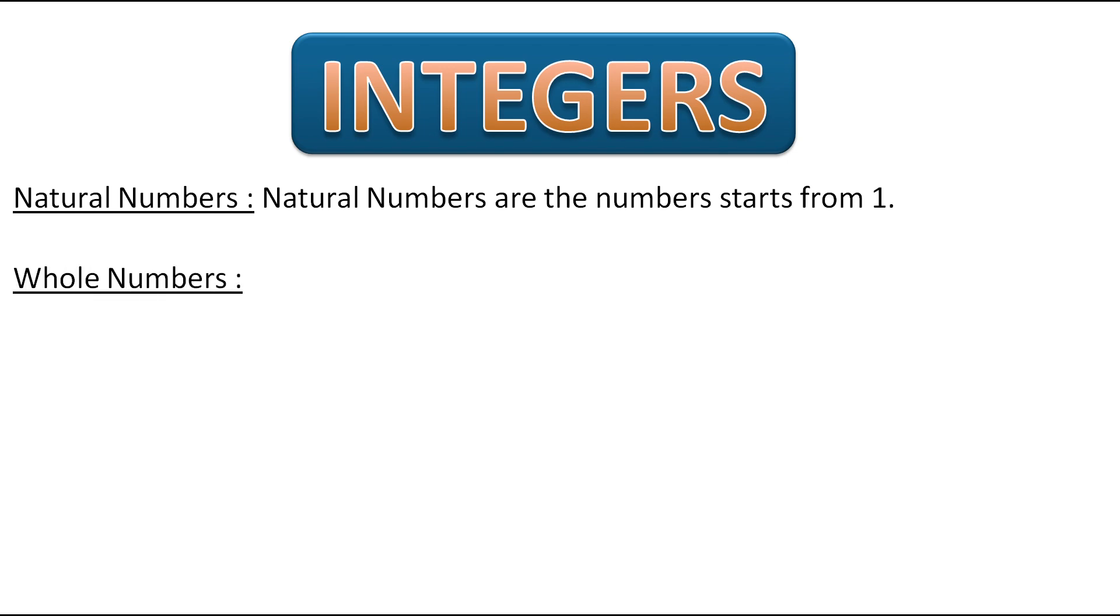Next comes whole numbers. Whole numbers are the numbers that start from 0. So when any number starts from 0 and continues with all the natural numbers, then that group is called whole numbers.